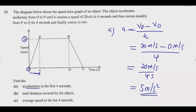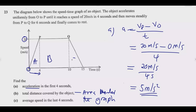Next we go to part B — the total distance covered by the object. The total distance is the area under the graph. We have three regions: A, B, and C. We find the area for A, the area for B, the area for C, then add those three together to get the total distance.